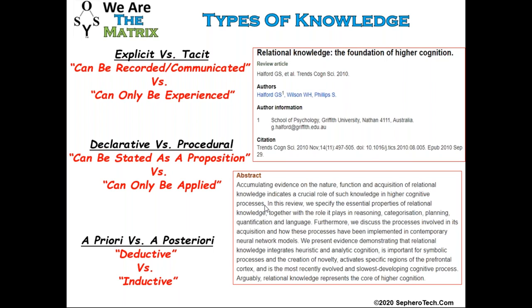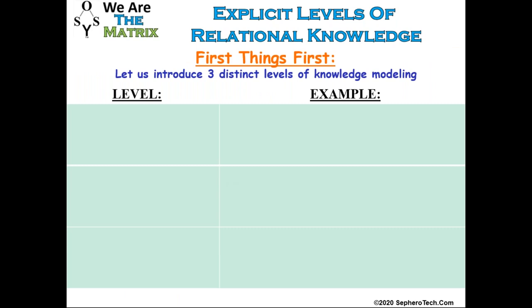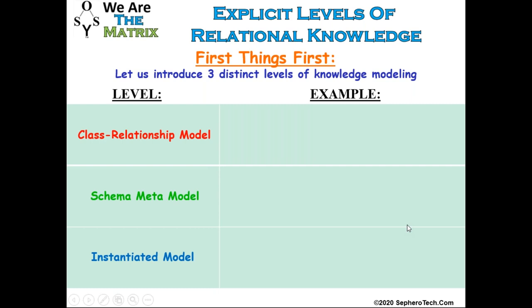This class is about knowledge modeling. It's about giving students a framework to weave all the technical tools they've been taught over a four-year undergraduate engineering degree into something that allows them to expand their ability to reason through relationships. Let's introduce three distinct levels of knowledge modeling as we implement them. We call the highest level a class relationship model. Within that class and relationship modeling construct, we can create individual schemas or metamodels that organize and structure the data we're going to instantiate within that modeling context.